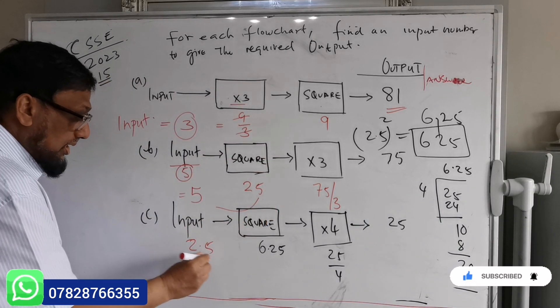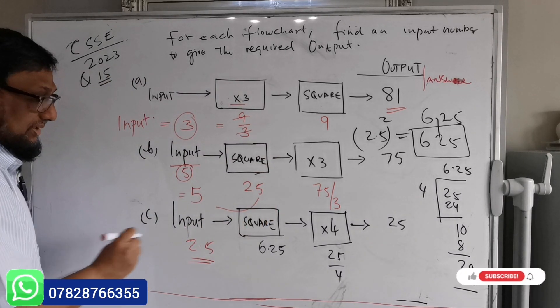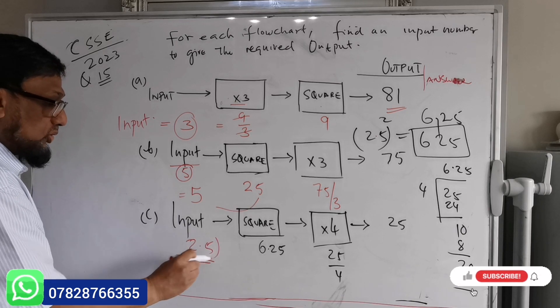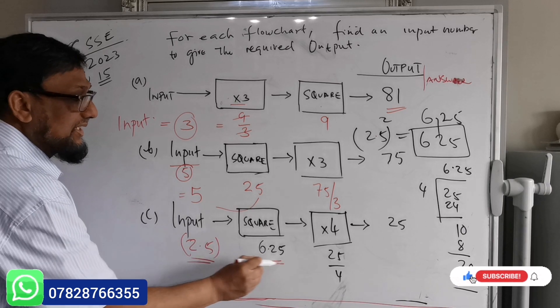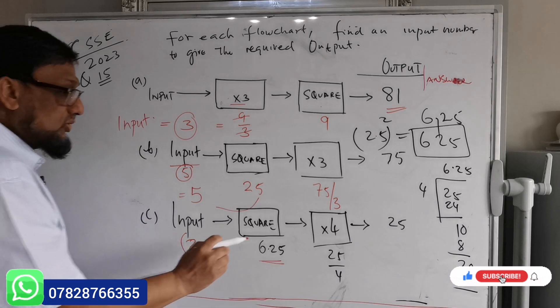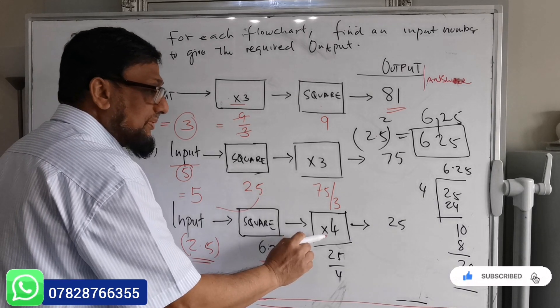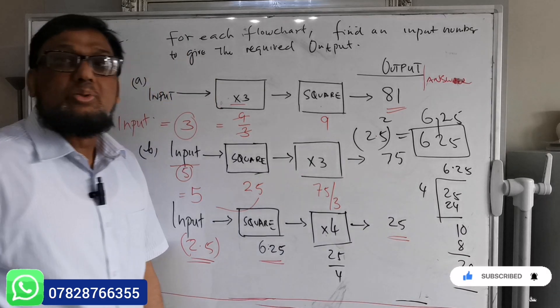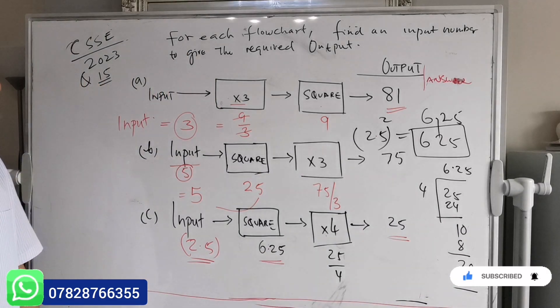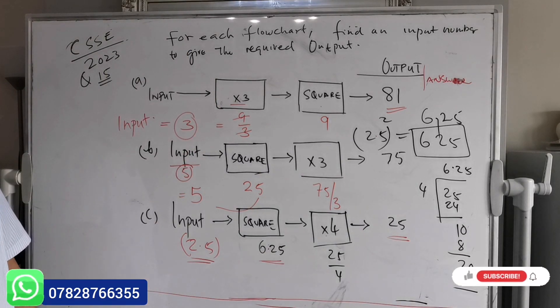2.5. You can check 6.25, when you square 2.5 you will get 6.25, and you multiply 6.25 times 4 you will get 25. So this is a very easy question but tricky.